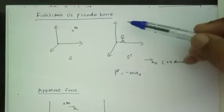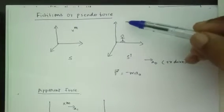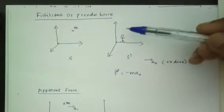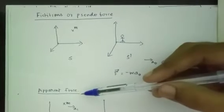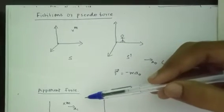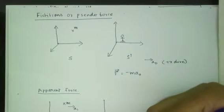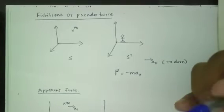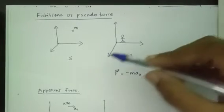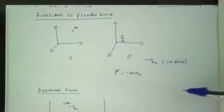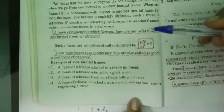In the Frame of Reference chapter, we are going to look at different forces: Fictitious force, Pseudo Force, Apparent Force, Centrifugal Force, and Coriolis Force. We are going to learn how to use the concept of the Non-Inertial Frame of Reference. Before that, we are going to look at the Inertial and Non-Inertial Frame of Reference.